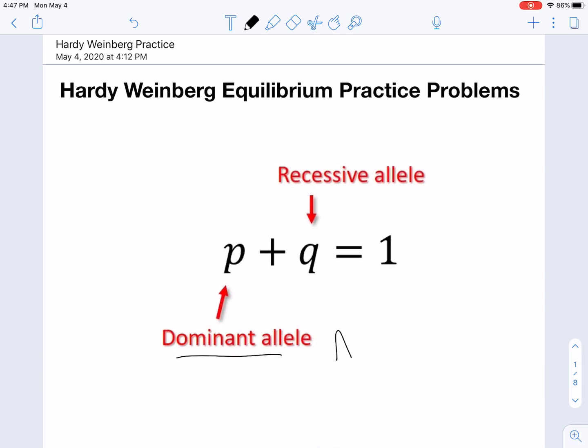Remember that P represents the dominant allele. I'm just going to use A for this. And Q represents your recessive allele. So that means that all of the big A's and all the little a's in the gene pool of the whole population have to add up to one or 100%. And that makes sense.